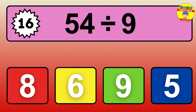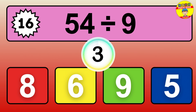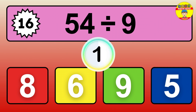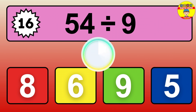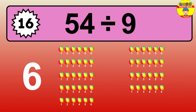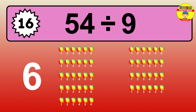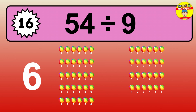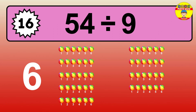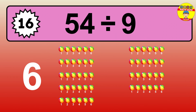54 divided by 9 is… time to think. Let's go to the solution. Divide the number 54 by 9. Each group contains 9 units. So, dividing 54 by 9 results in 6 equal groups. Thus, the result is… 54 divided by 9 equals 6.